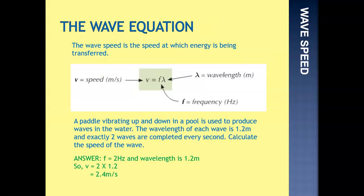So the wave equation. The wave speed is the speed at which energy is being transferred, so that's essentially the speed of the wave. Wave speed is equal to frequency times wavelength. In that diagram there we'll see the symbols for it, and the symbol for wavelength is lambda, that's the Greek letter lambda, it looks like an upside down y. And you'll hear it referred to as v equals f lambda. But basically the speed is the frequency times the wavelength.